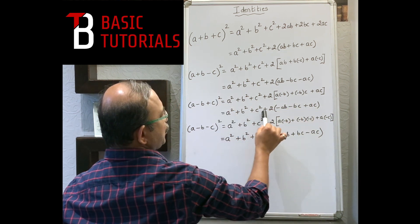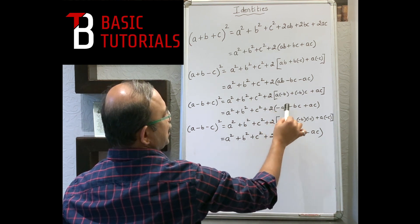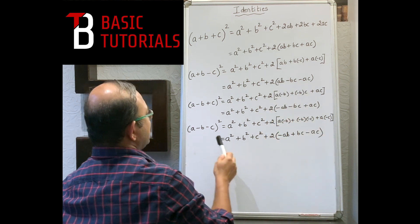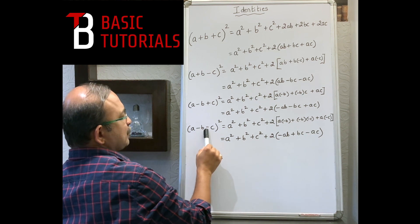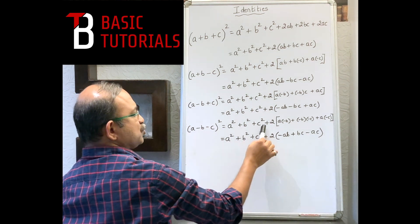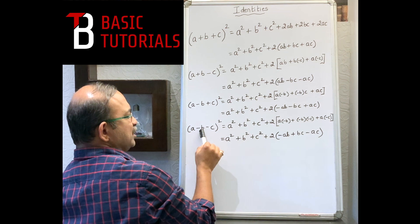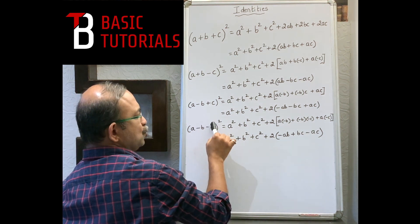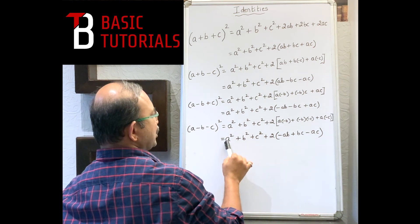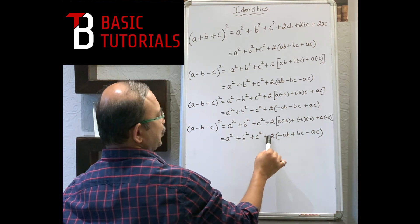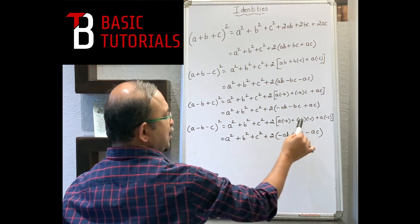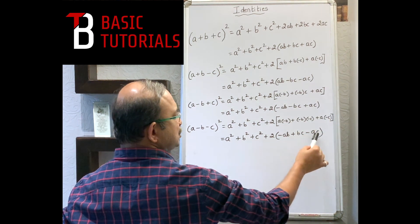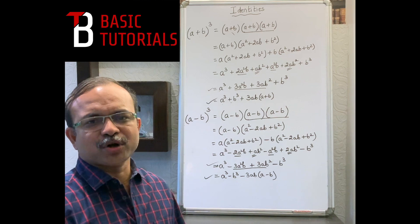For (a-b-c)²: a² + b² + c² + 2(-ab + bc - ac). These sign variations all follow from the same base identity — just track the signs of each cross-product term carefully.